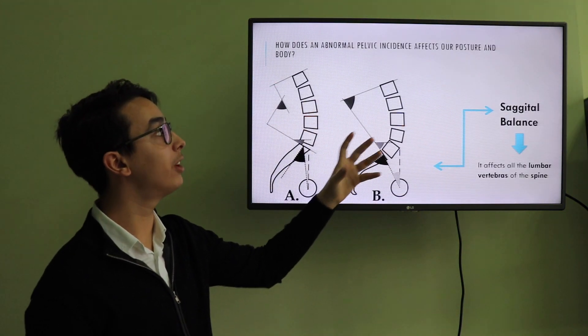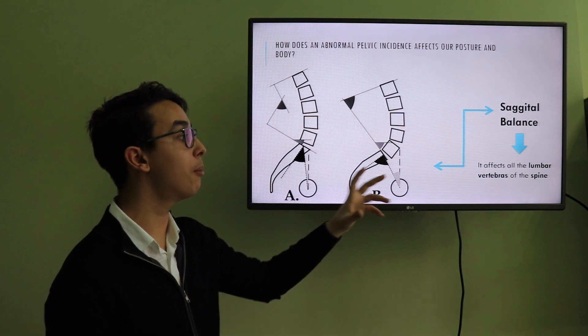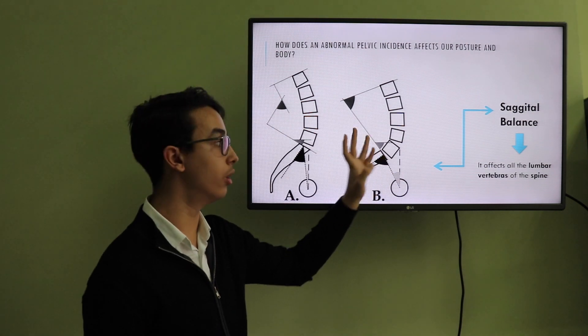How does an abnormal pelvic incidence affect our posture and body? The sagittal balance. It affects all the lumbar vertebrae of the spine because a larger pelvic incidence causes the spine to make a larger curve.